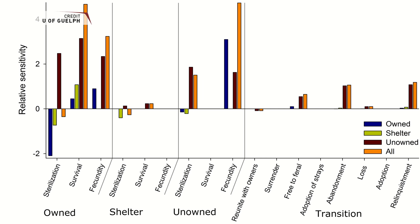Interestingly, the model also found that the number of cats in shelters would drop when there was an increase in sterilization rates of all cat categories — owned, stray, and feral. And finally, it also found that total cat population size was most affected by the breeding rates of unowned cats.